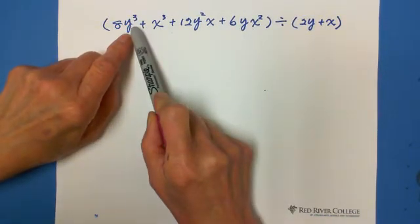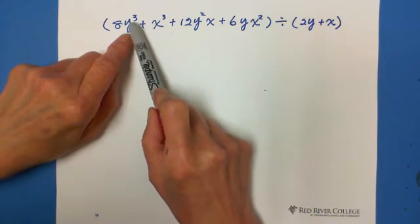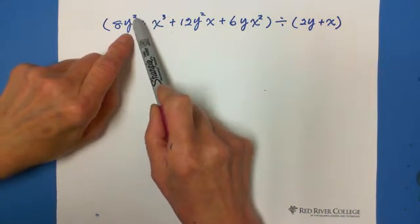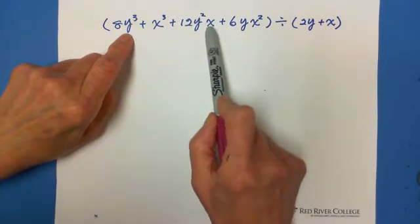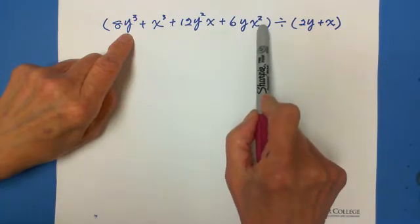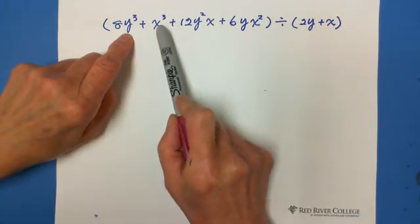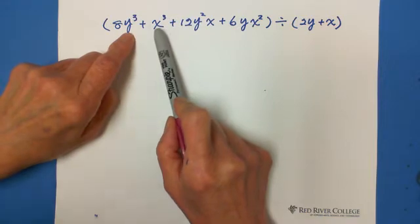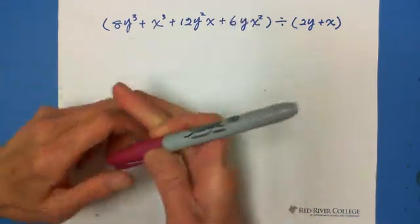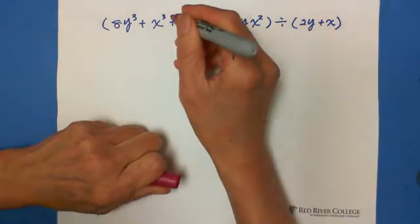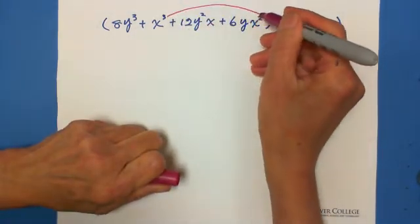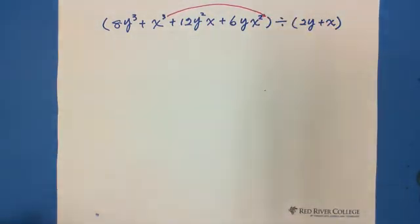And x at this term, there is no x, meaning x is 0 exponent. Then go to 1 exponent, 2 exponent, then 3 exponent. That's why in this situation, we need to move x cubed to the last. So move this one to there.